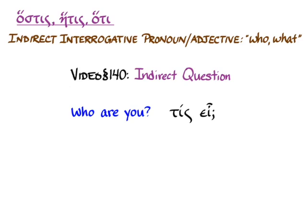But if we want to report that question, 'She asks who you are,' we have to use the indirect interrogative. You can see how English keeps the same pronoun but moves things around, moves the word order around to help us hear the indirect question. Greek is going to use a different pronoun instead.